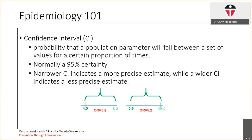Along with this is a confidence interval. The confidence interval is the probability that a population parameter will fall between a set of values, normally measured with 95% certainty. The narrower the confidence interval, the more precise the estimate is with respect to the odds ratio, whereas a wider confidence interval indicates a less precise estimate. In the first example, we have an odds ratio of 5.2 with a confidence interval of 4 to 6.